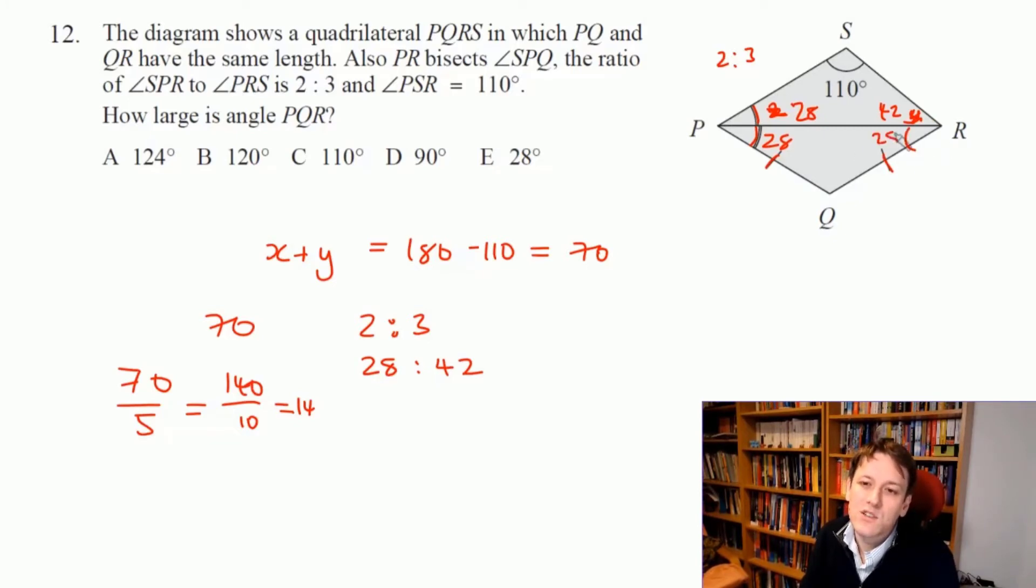That means that the angle we're looking for, angle PQR down here, is going to be 180 minus 28 minus 28, or just 180 minus 56, which is 124. So the answer is A, 124 degrees.